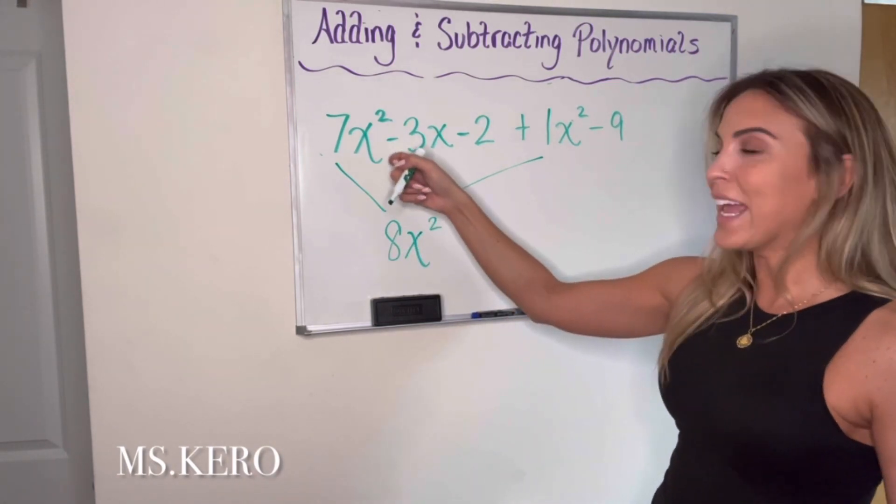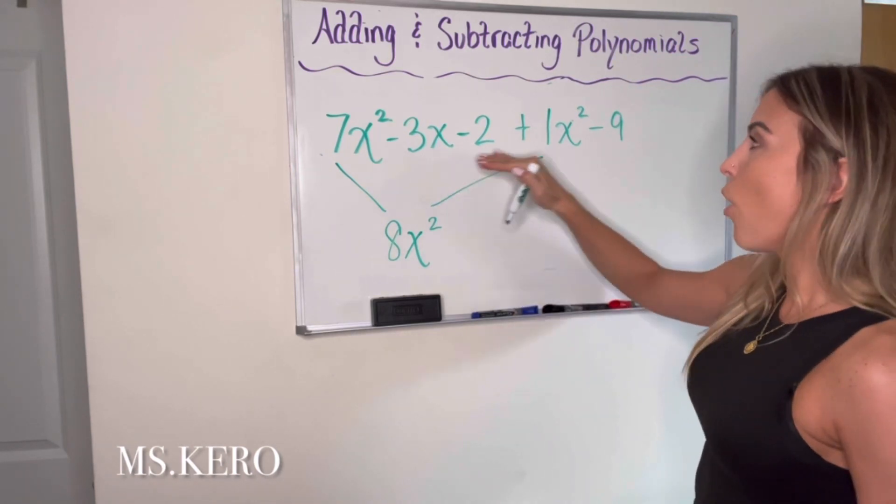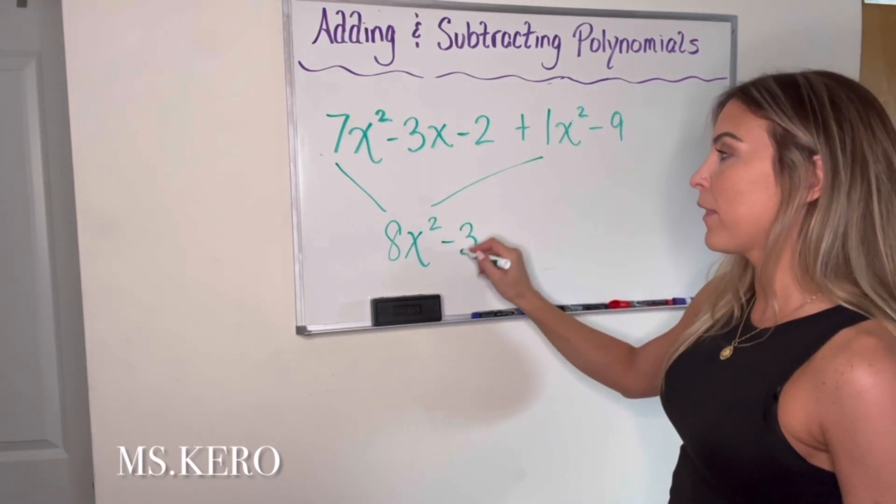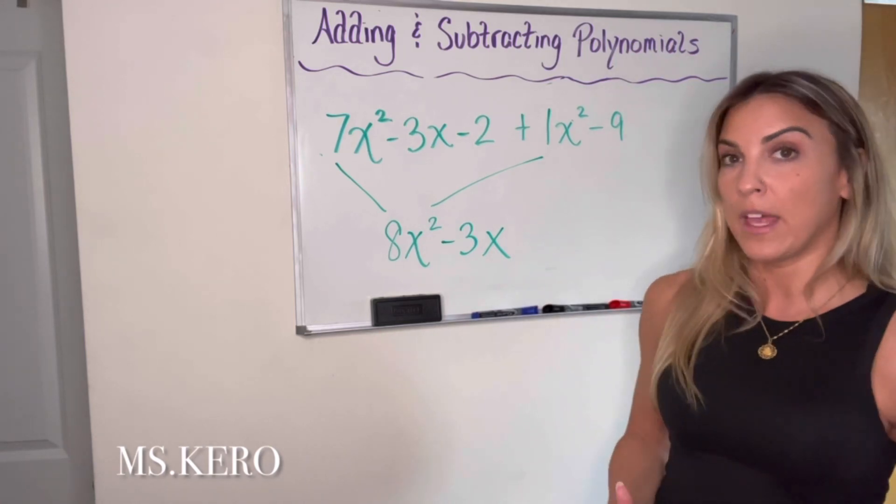Moving on to the next term, I have a negative 3x. There are no other terms here that have an x. So I'm just going to go ahead and bring that guy down because I can't combine it with anything else up here.